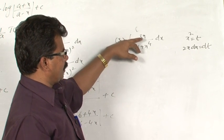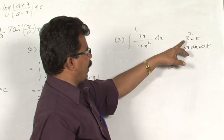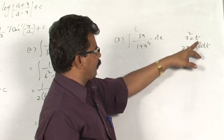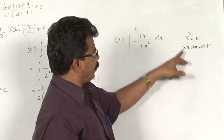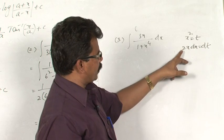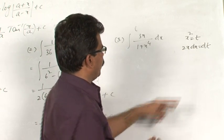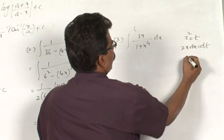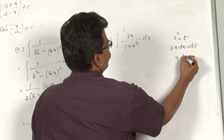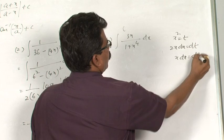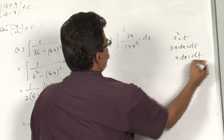In the numerator, you have x. Therefore, I have taken x square is equal to t. The derivative of this is 2x dx is equal to dt. Therefore, x dx is equal to dt by 2.